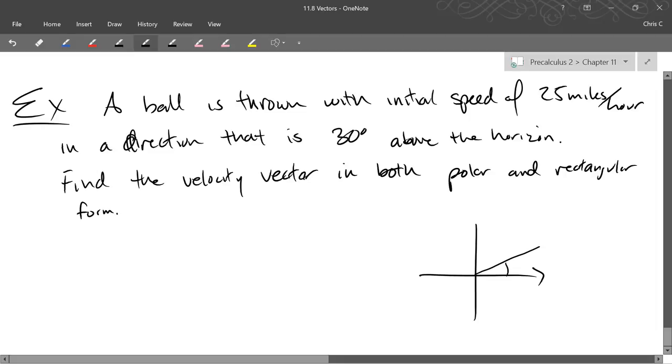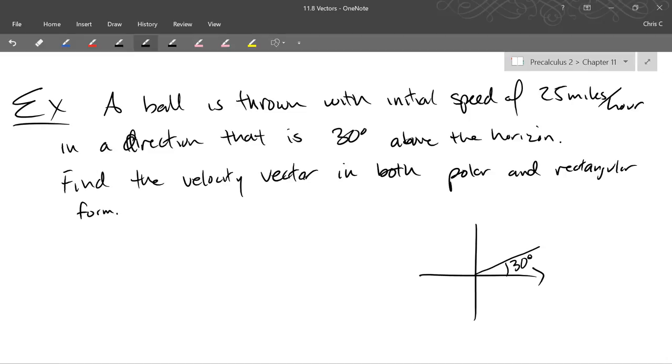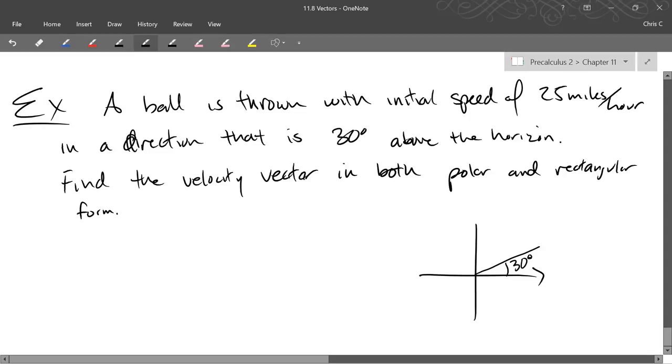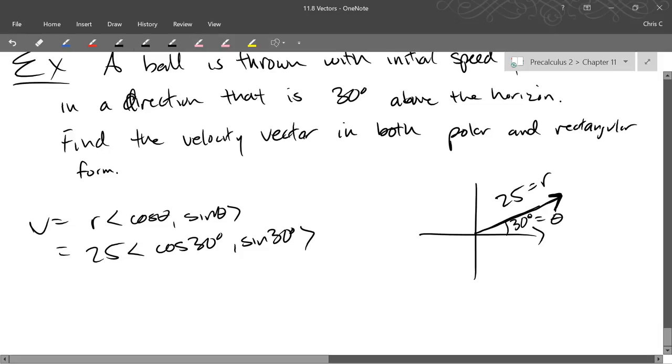I could throw it the other way and my x would just be negative instead of positive. Now 25, what property is 25 with this vector? It's not the angle, we'll use 30 degrees for the angle. That would be the radius or the magnitude. So this vector right here, this is the velocity, the initial velocity of the ball when it's thrown, so 25 is the radius or the magnitude. I think we use r right above, so we'll go with r here, and 30 degrees is theta. So in diamond notation we get 25 times cos 30, sine 30. So that's polar form.